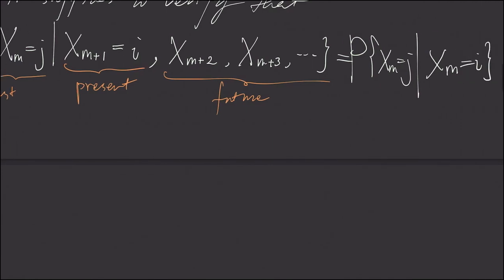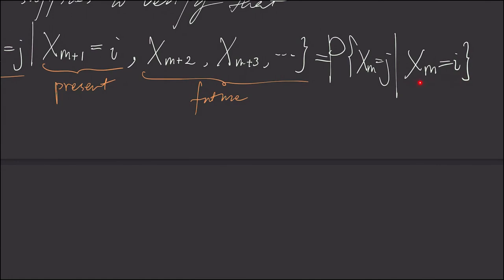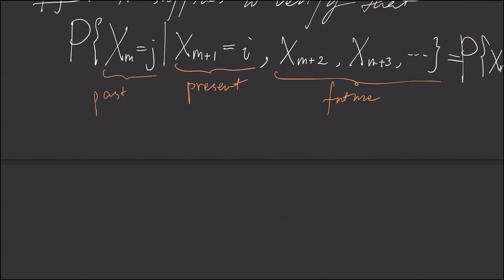I think here I forgot to write down, this should be X sub M plus 1 instead of X sub M. First, we notice that because of the memoryless property of Markov chain, the conditional distribution of the future is independent with the past.